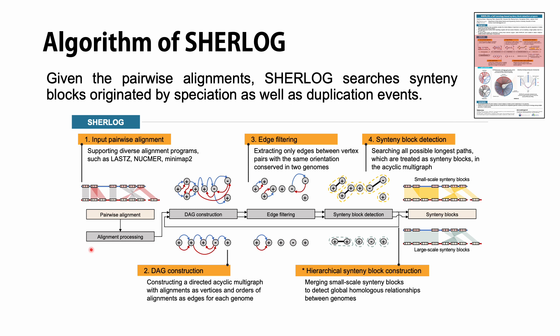In the alignment processing step, short alignments are filtered out. Then, Sherlock constructs a directed acyclic multigraph with cleaned alignments as nodes and overlapping alignments as edges for each genome.